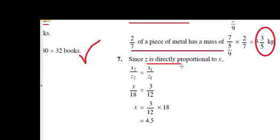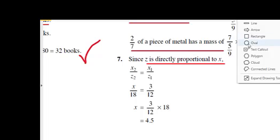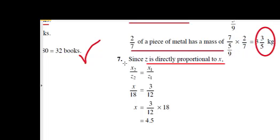By using proportion method, we may use this formula: x₂ over z₂ equals x₁ by z₁. This is the formula. Now apply the values. The value of z₂ is 18, z₁ is 12, and x₁ is 3. This is x₂ which we have to find.